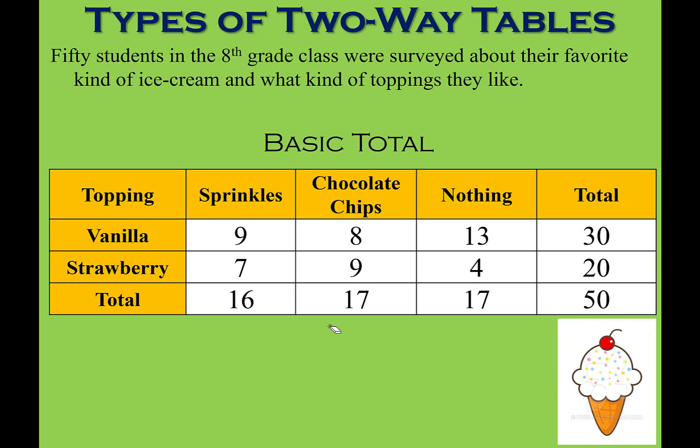Here we have an example based on frequency. We looked at 50 eighth graders and surveyed what type of ice cream and topping combination they like. 30 students chose vanilla and 20 students chose strawberry — you can add those together to get 50. This is a frequency table telling me how many there were for each one.